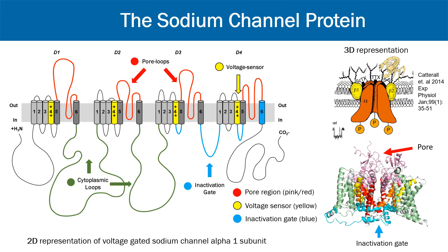All sodium channel genes share common evolutionary origins and a conserved basic structure. This can be seen on the right with 3D illustrations of the channel's alpha subunit, composed of approximately 2000 amino acids. The 2D illustration on the left highlights key regions in the channel structure.